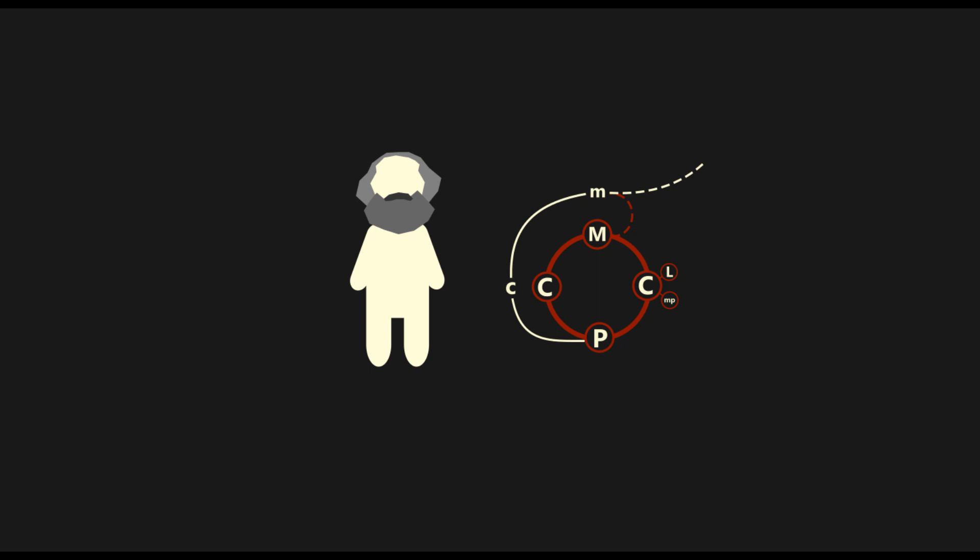To begin with, when we use the term turnover, we are referring to a completed cycle of capital, from its start in the money form to its inevitable and necessary return to the money form. As specified in the video on the various circuits of industrial capital, the money form need not be the starting point for capital. More accurately, there is no starting point in a process that is by definition cyclical. We start with money, as Marx often does, purely for conceptual reasons.